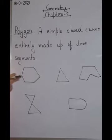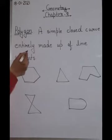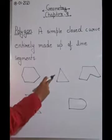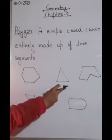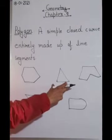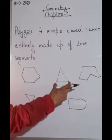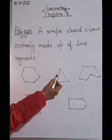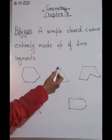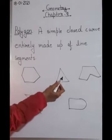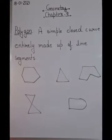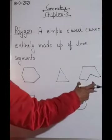So that figure is a polygon because it is a simple closed curve entirely made up of line segments. Now consider the triangle - a triangle is also a polygon because it is a simple closed curve and it is entirely made up of line segments.